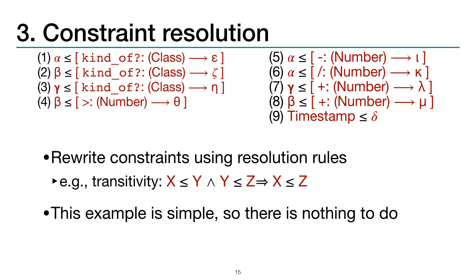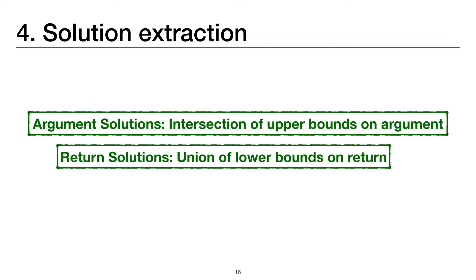At this point, we would typically perform constraint resolution, which applies a series of constraint rewriting rules like transitive closure. But this example is so simple there's actually nothing to do here — you can see the paper for more details on constraint resolution. Finally, we perform solution extraction. For arguments, we take the intersection of upper bounds on that argument's type for the solution, and for returns, we take the union of lower bounds on the return type.